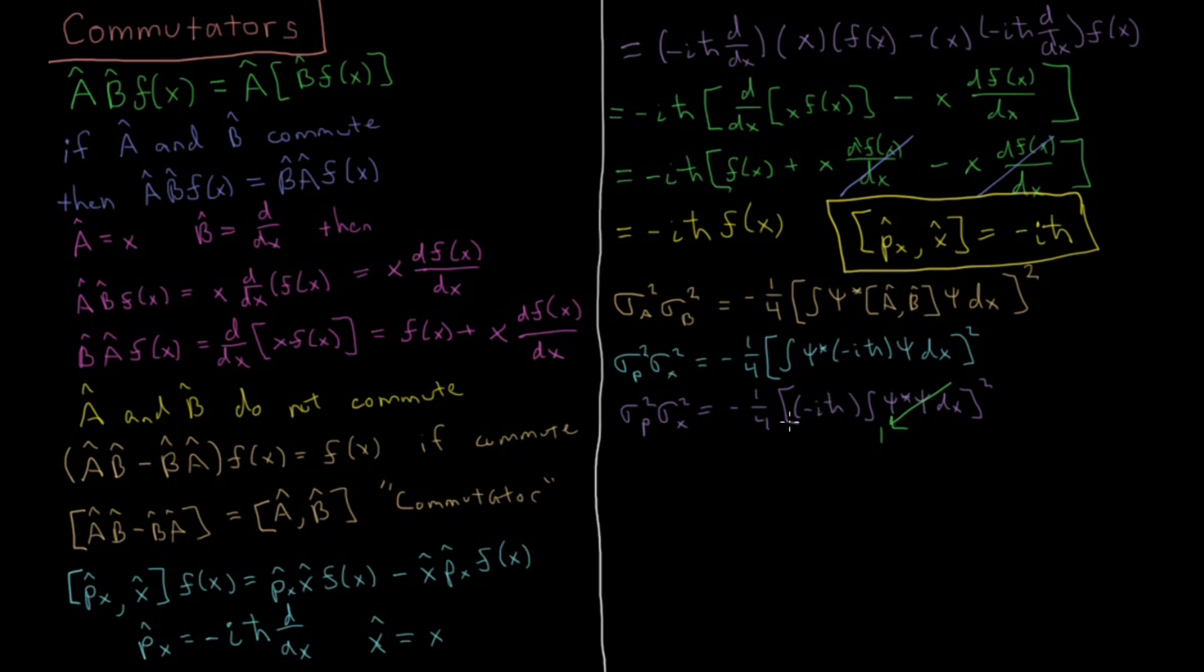If this is a normalized wave function, which we're going to assume it is, then this whole integral goes to one. That leaves us just with the minus i h-bar, and then we square that, and we get i squared h-bar squared. I squared is minus one, so that gives us minus h-bar squared. So we have sigma p squared sigma x squared equals minus one-fourth times minus h-bar squared. The total result is h-bar squared over 4.